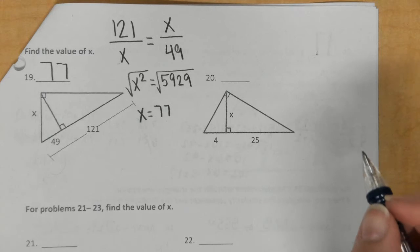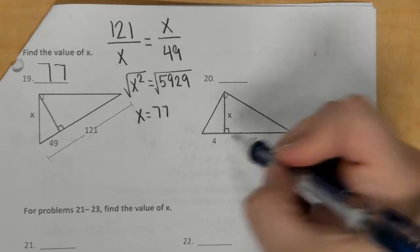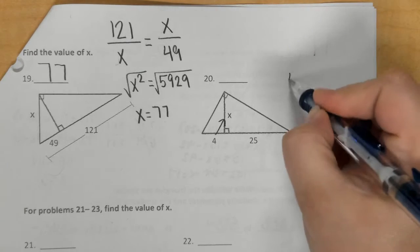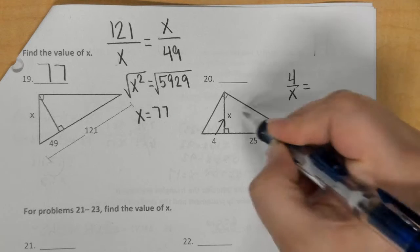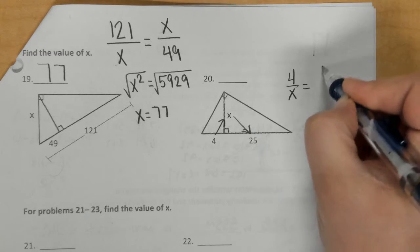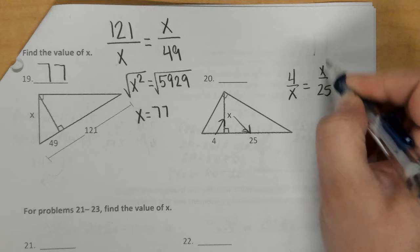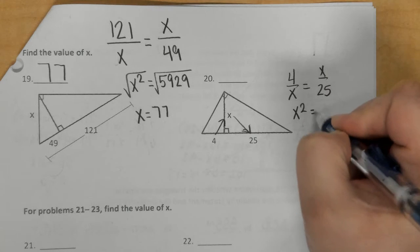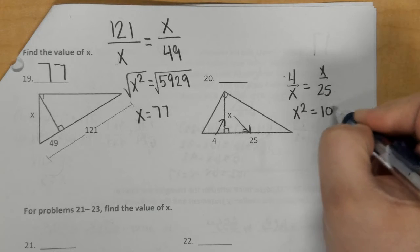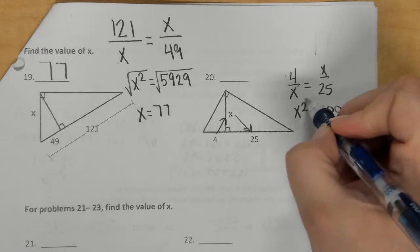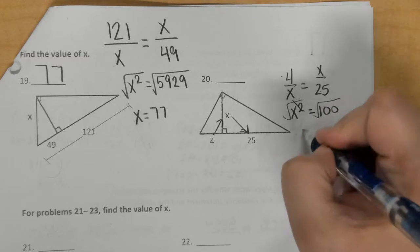In number 20, this is when you are comparing the two smaller triangles, so we go 4 over x equals x over 25. So, x times x is x squared, 4 times 25 is 100, and then we square root of both sides, and we get that it is 10.